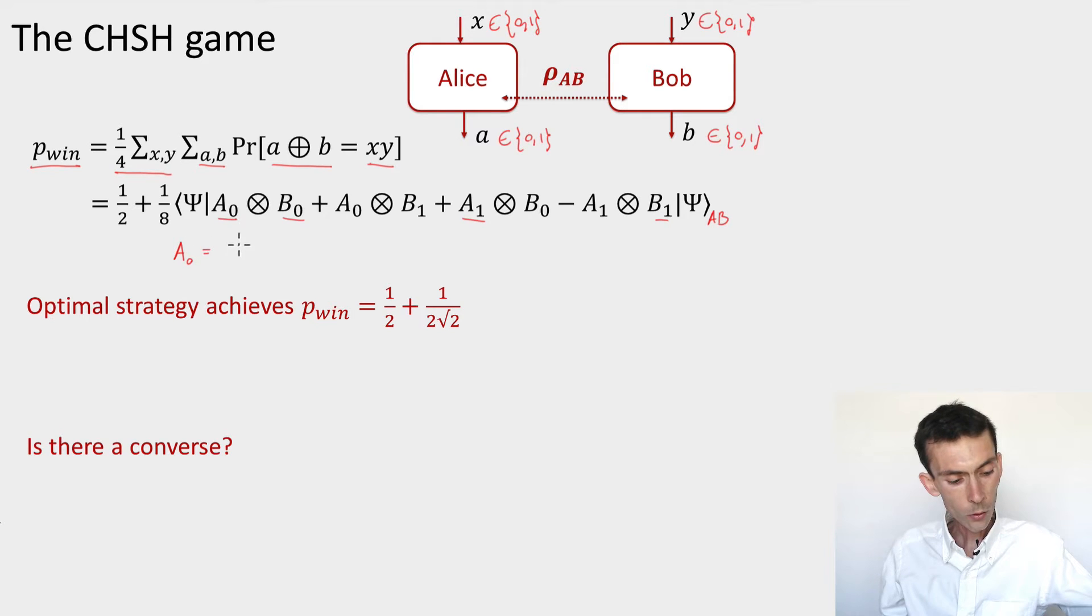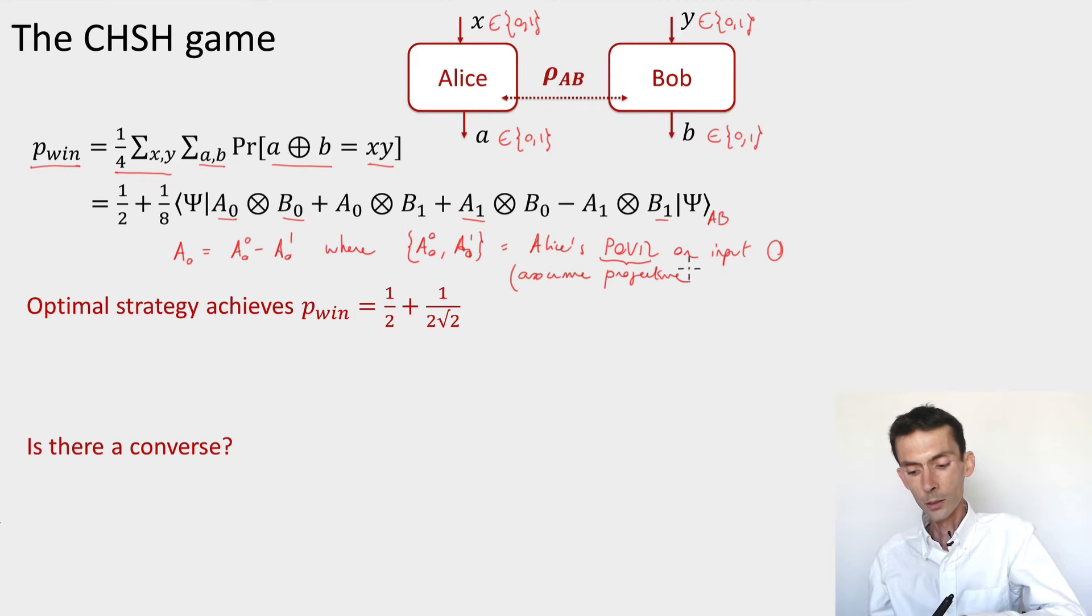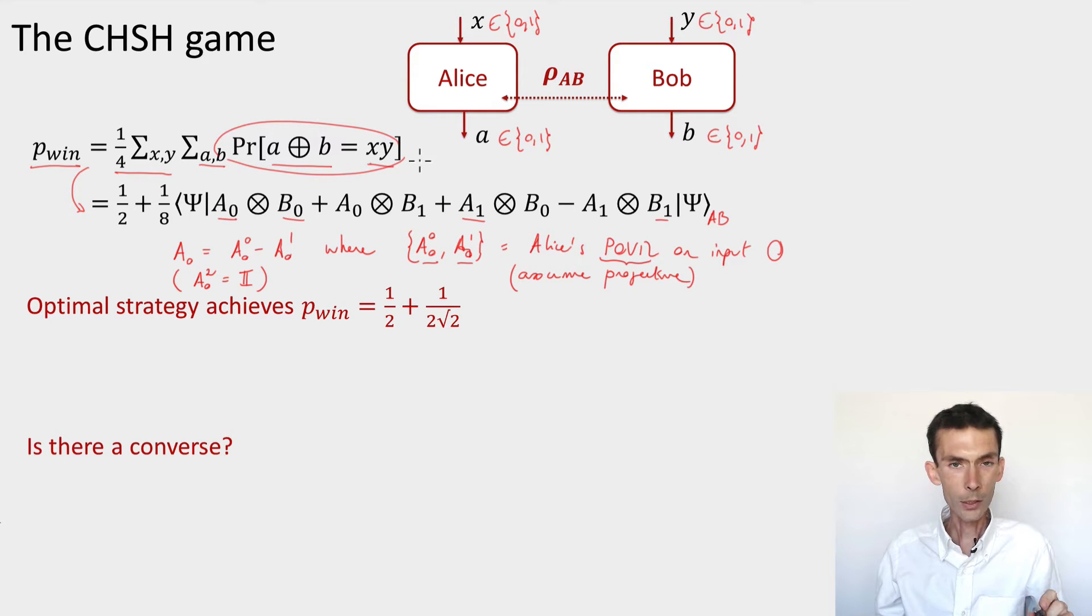It's equal to a half plus one-eighth, these are just normalization factors, times this big expression here. What's the expression? Psi here is the state that they share, psi_AB. I can always assume that rho is a pure state, just by giving Alice or Bob a purification of the state. And now what these A0, B0, A1, and B1 are here, they're observables associated with Alice and Bob's measurements. A0 is equal to A_{0,0} minus A_{0,1}. These are the POVM operators associated with Alice's measurement on input 0. We can also purify these POVMs and assume that they're actually projective measurements.